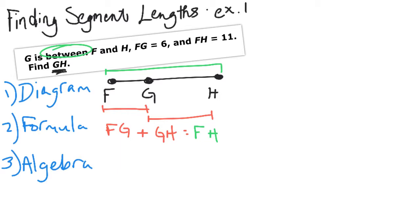Alright, now let's look at what we got and see what we can plug in. It says that FG is 6, so I'll replace that FG with a 6. It says that GH is, we don't know GH. We're trying to find it. So still GH. If you really want, you can put an X there, but I'm going to leave it as GH. And it says that FH is 11. So I'll replace FH with 11.